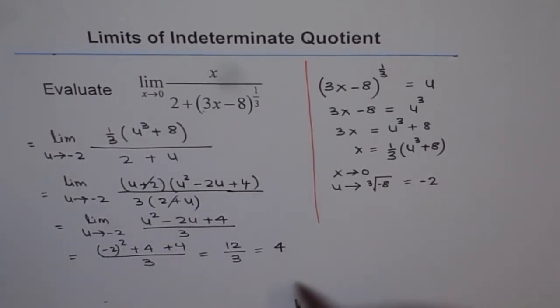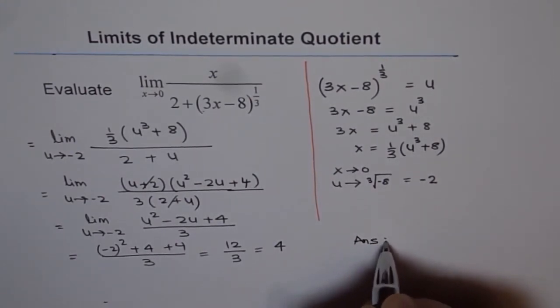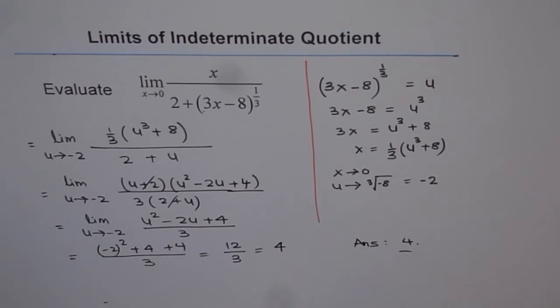And that gives me answer as 4. So the limit of this function as x approaches 0 is 4. So our answer is 4. So that is how we are going to do this problem. Thank you.